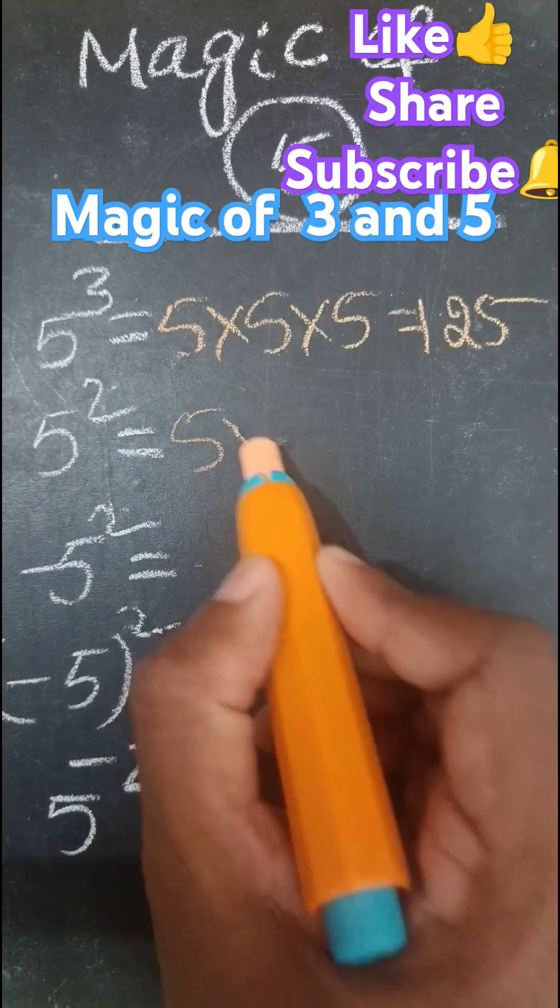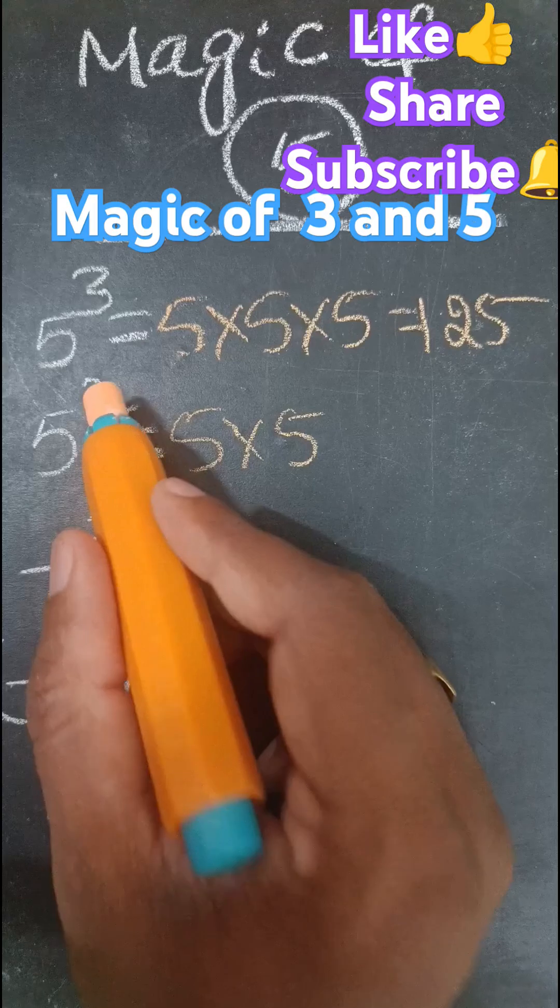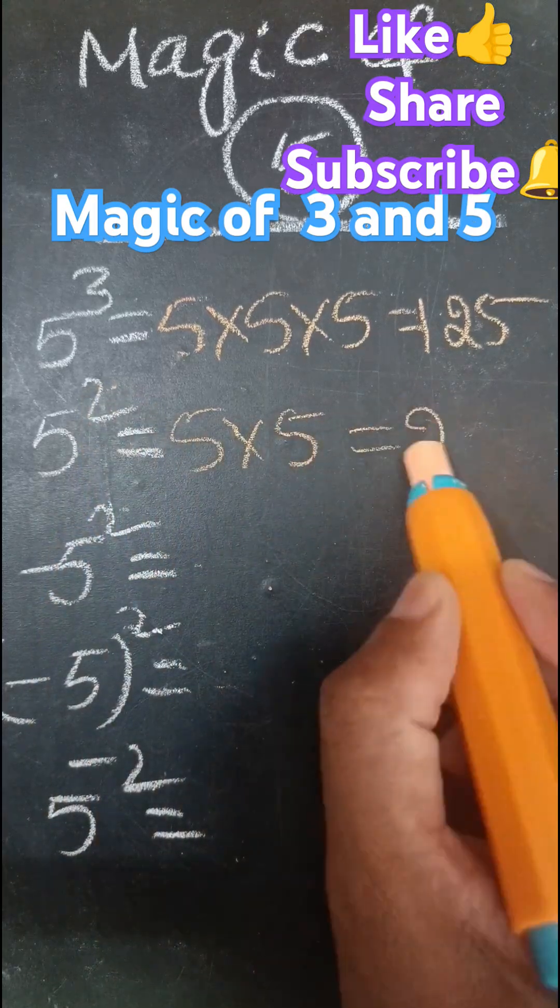5 square. 5 into 5. Power means how many times here? 2 times, 5 into 5. 5 into 5, 25.